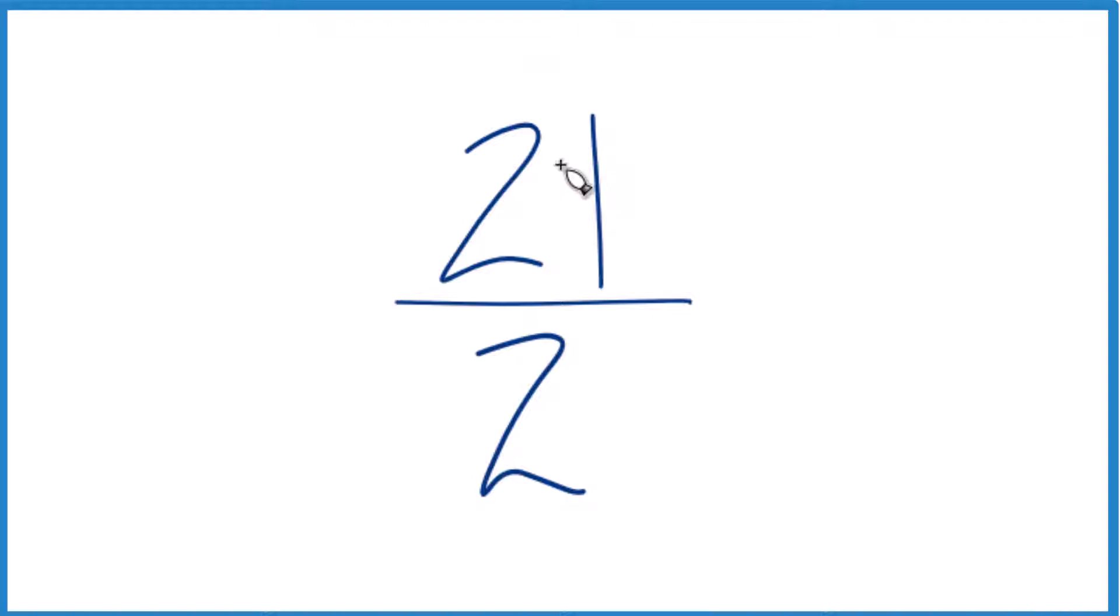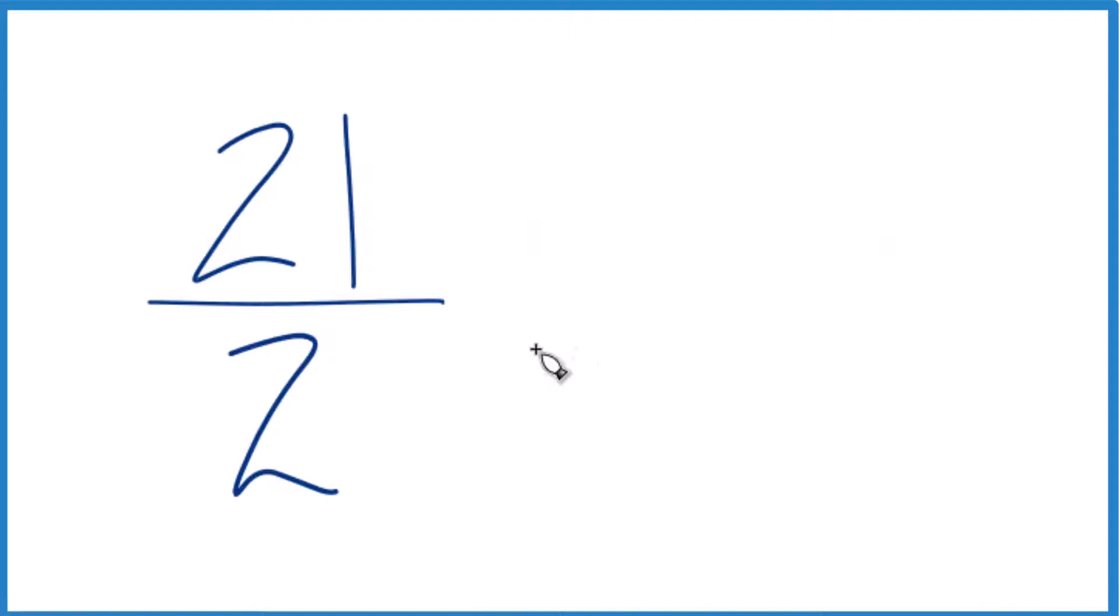So first off, you could divide 21 by 2 on a calculator. That would give you the answer. And we can even just look at this and see 21's a lot bigger than 2. So we're going to have a number that's greater than 1. 2 times 10, that's 20. Pretty close. So our answer's going to be 10-something. So it's good to be able to estimate that.